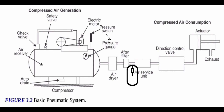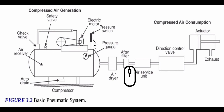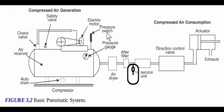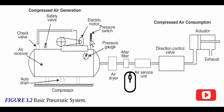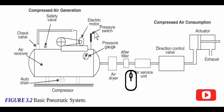4. Pressure switch: A pressure switch is used to maintain the required pressure in the receiver. It adjusts the high pressure limit and low pressure limit in the receiver. The compressor is automatically turned off when the pressure is about to fall below the low limit.